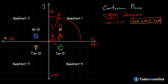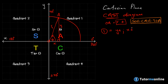In the first quadrant, the A stands for 'all', meaning we can use any of our trigonometric functions to determine the size of theta and get a positive value. We need to know which trigonometric functions give us a positive value for the size of theta. In the first quadrant, the y value is always positive, the x value is always positive, and r is a constant positive value, so we can use any of our functions.